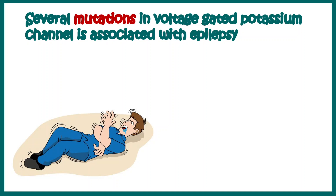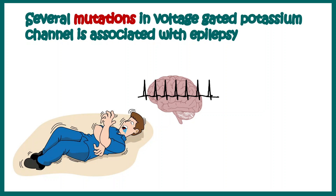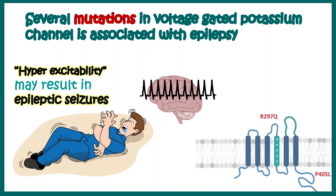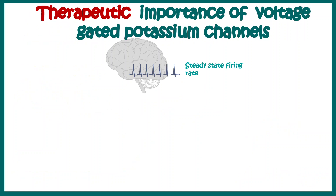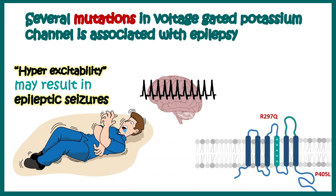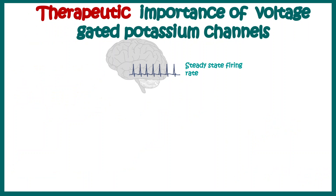Several diseases are associated with mutations in KV channels, such as epilepsy. Normally there is regular neuronal activity in the brain, but in epilepsy there is hyper-excitability resulting in seizure-like symptoms. Mutations reported in KV channels — for example KV3.3 — are associated with epilepsy. When there is less or non-functional potassium channel, repolarization does not take place or takes place at a slower pace, leading to this hyper-excitability.